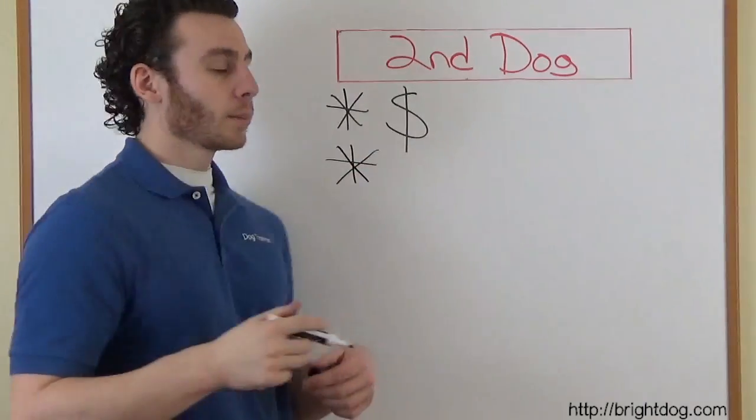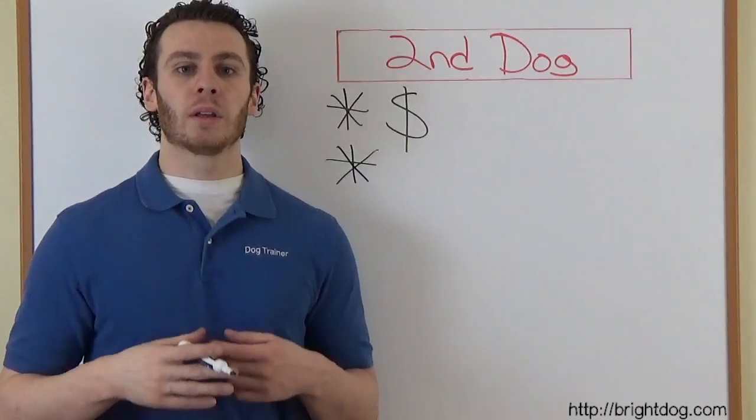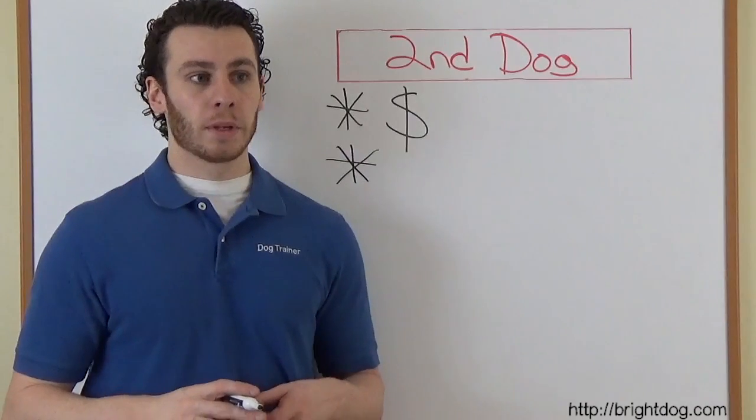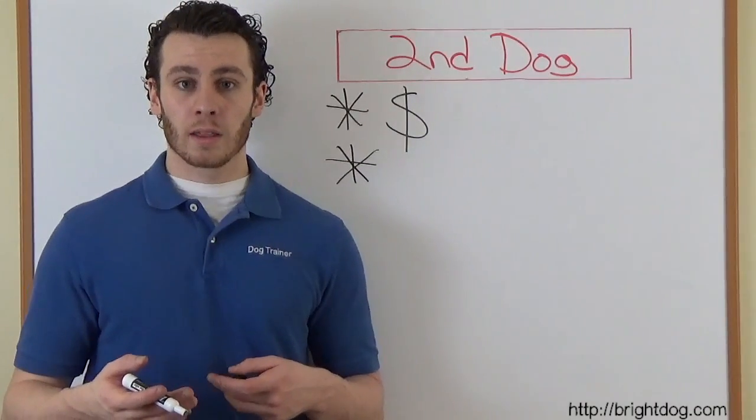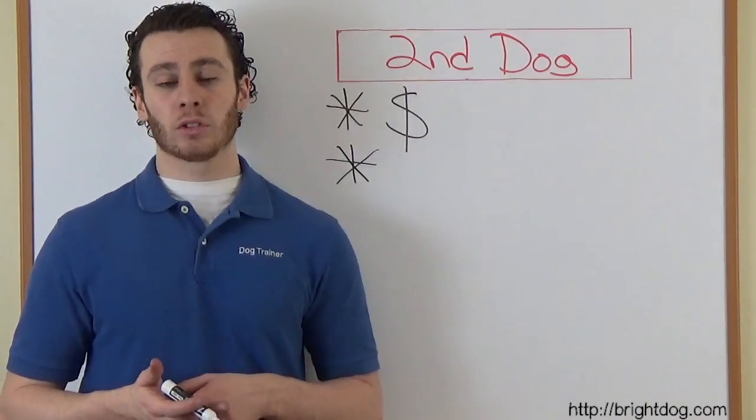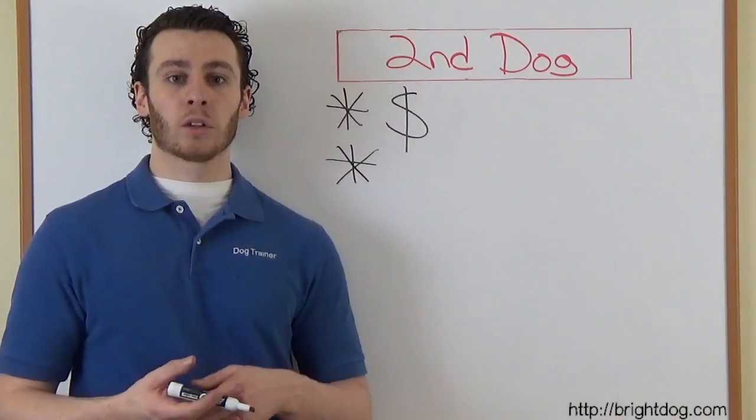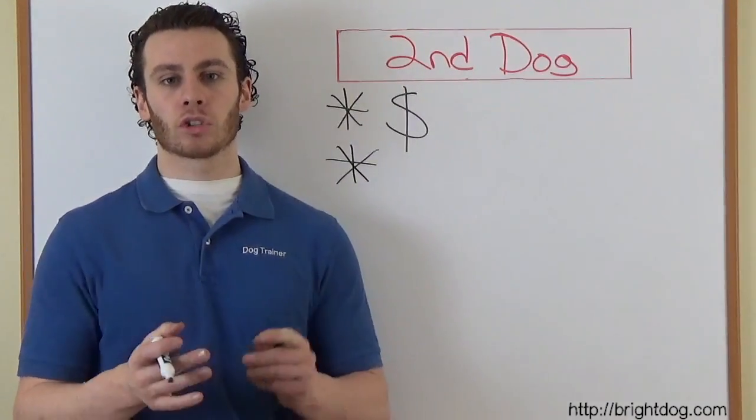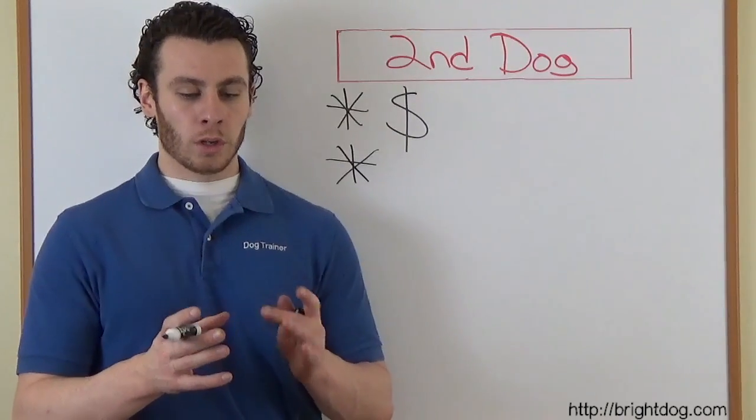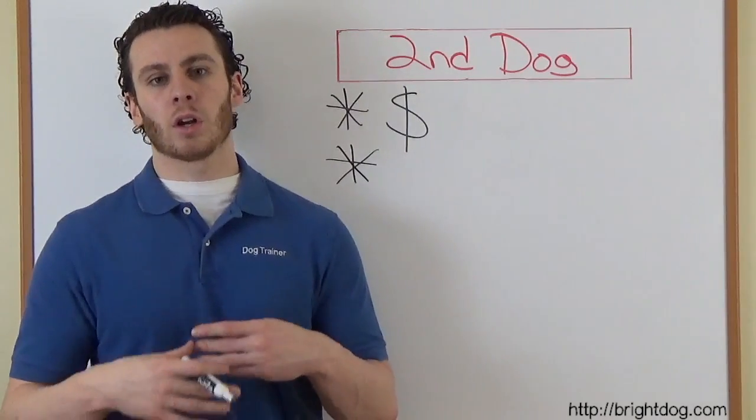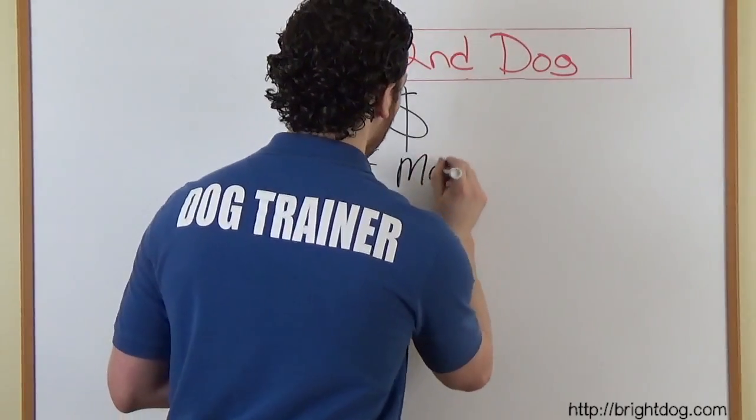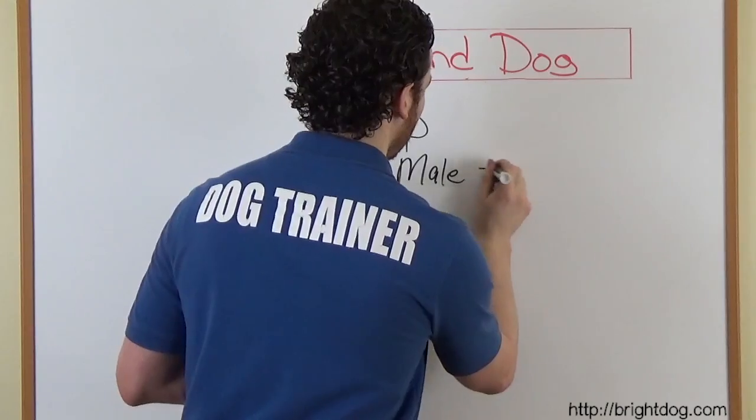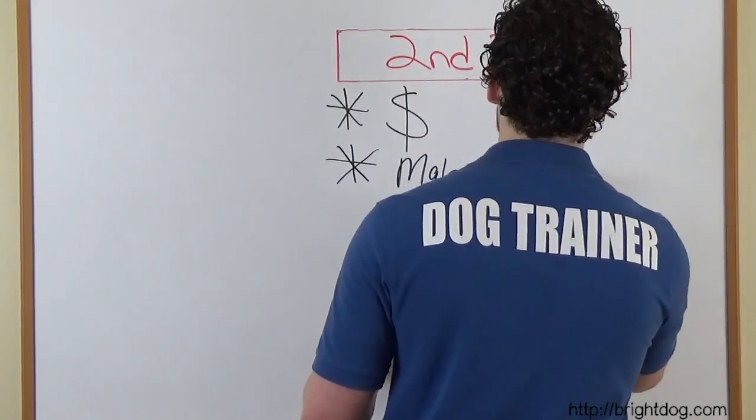Number two, you've got to think about how is your current dog. Because if your current dog has behavior problems with other dogs, then how will he react to this new dog? And one tip to try to make sure that your current dog is going to get along with the new one is if you have a male dog, you want to get a dog of the opposite sex.